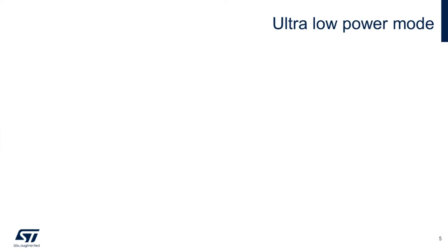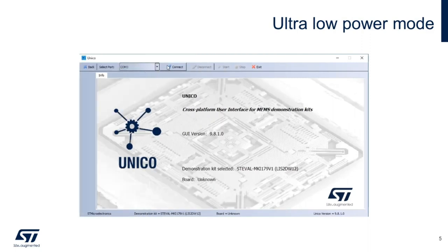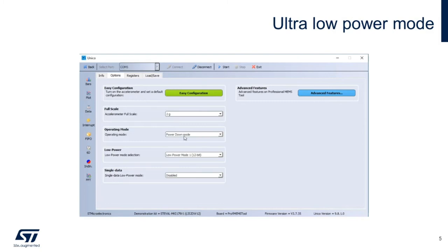As a starting point, let's start by measuring the ultra-low power modes of the LIS2DW12. When opening Unico, it's time to connect the COM port with the Profi MEMS. Once the connection is established, we are now able to configure the sensor that is on top of the board. As you can see, the device is currently in power down mode.